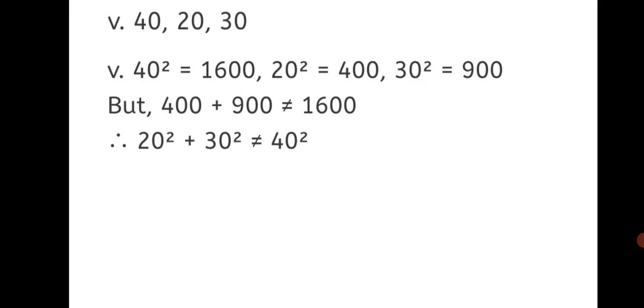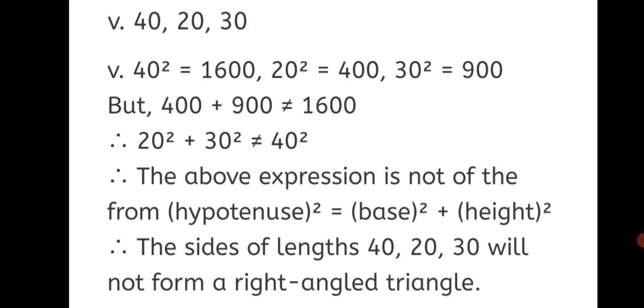Question number 5: sides 40, 20, 30. The squares: 40 square is 1600, 20 square is 400, and 30 square is 900. Adding the squares of the smaller numbers: 400 plus 900 is not equal to 1600. Therefore, 20 square plus 30 square is not equal to 40 square. The above expression is not of the form hypotenuse square equals base square plus height square. Therefore, the sides 40, 20, and 30 will not form a right-angled triangle.